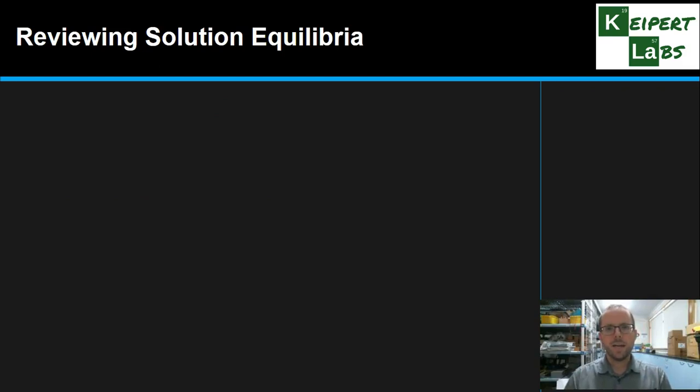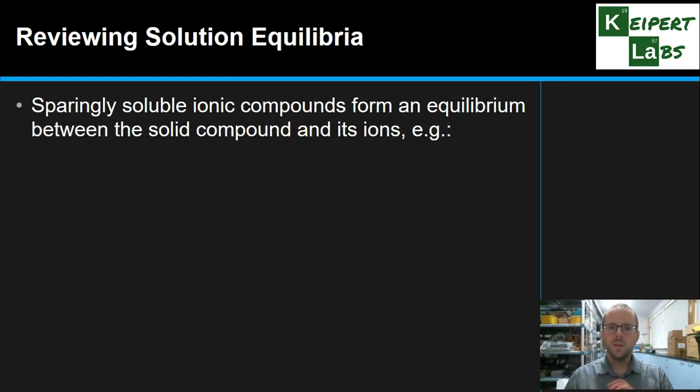Let's firstly go back and have a look at the equilibria that get established when a sparingly soluble compound dissolves. We get an equilibrium between the solid and the ions that it forms in solution. For example, when lead iodide dissolves in water, we get lead ions and then iodide ions that are aqueous. The ratio of the ions and how they're put together in the compound affects the mole ratio of how many ions we get when it dissolves.